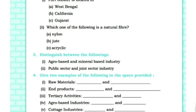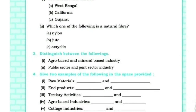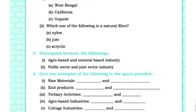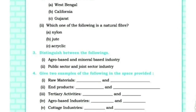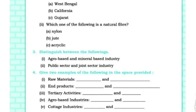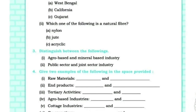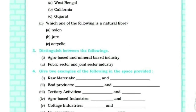Tertiary activities include banking and transport. Agro-based industries include dairy industry and cotton textile. Cottage industries include pottery industry and basket weaving industry. Examples of cooperatives include Anand Milk Union Limited and Sudha Dairy.